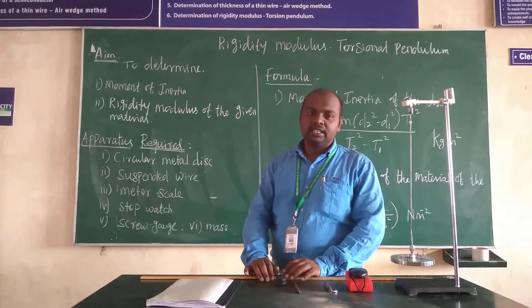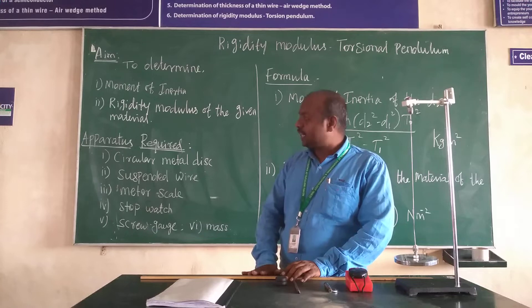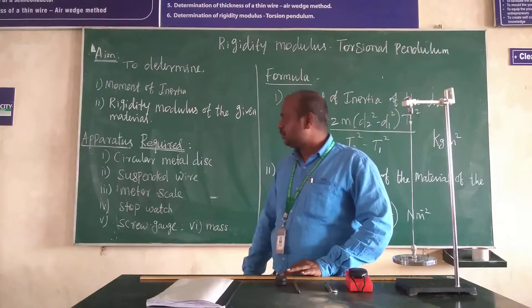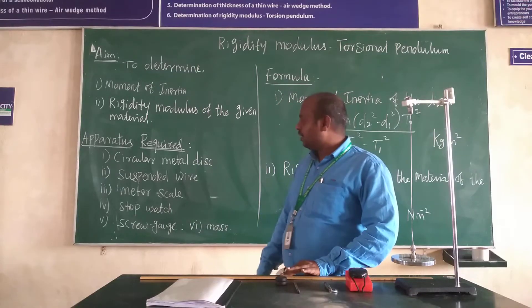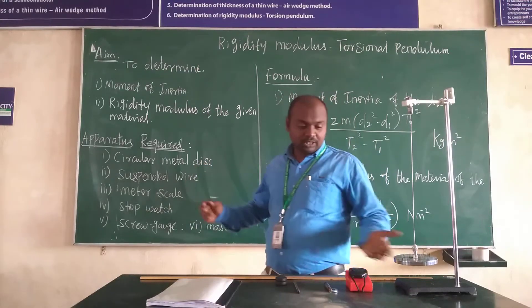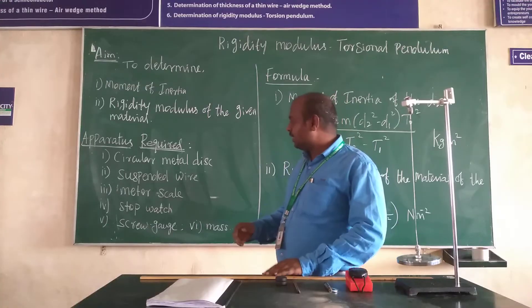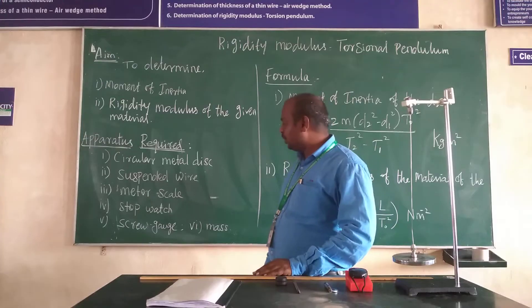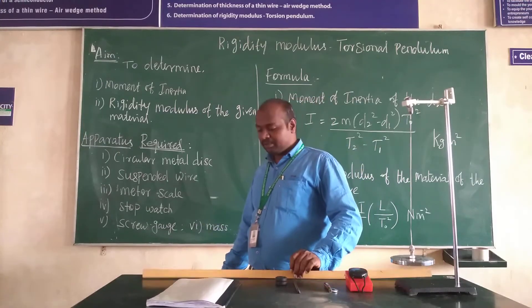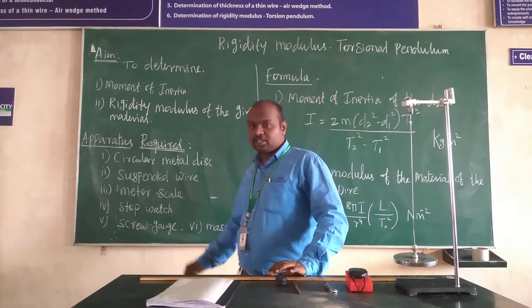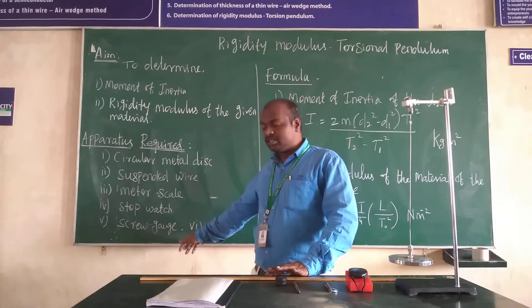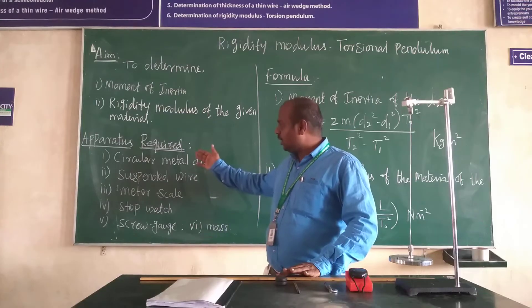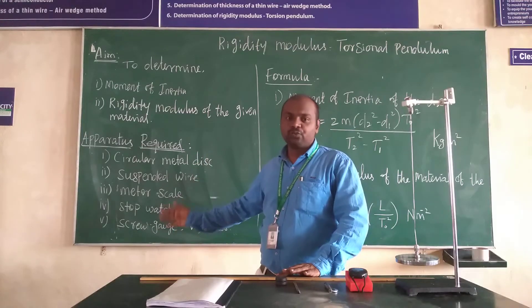To conduct this experiment, the apparatus required are: circular metallic disk, suspended wire, meter scale, stopwatch to measure the time, screw gauge, and lastly two masses. These are all the apparatus we require to perform this experiment.